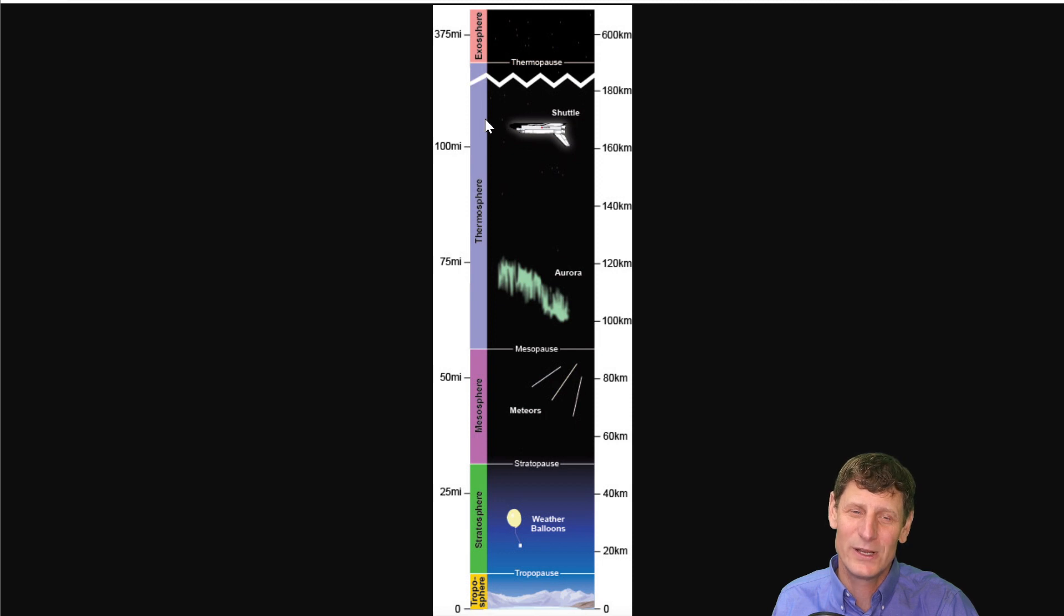What this is telling us is that there's really not much atmosphere out here at all. So the difference between the thermosphere and outer space is small. It's outer space for all intents and purposes. You need a space suit to be out there, and the exosphere is even farther out, so even fewer atoms and molecules of gases.